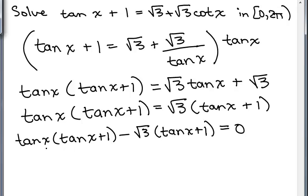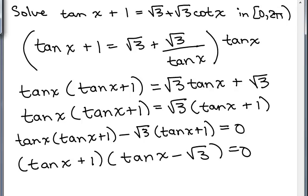And now the greatest common factor is tan x plus 1 times, I've got left, the tan x minus √3 equals 0.